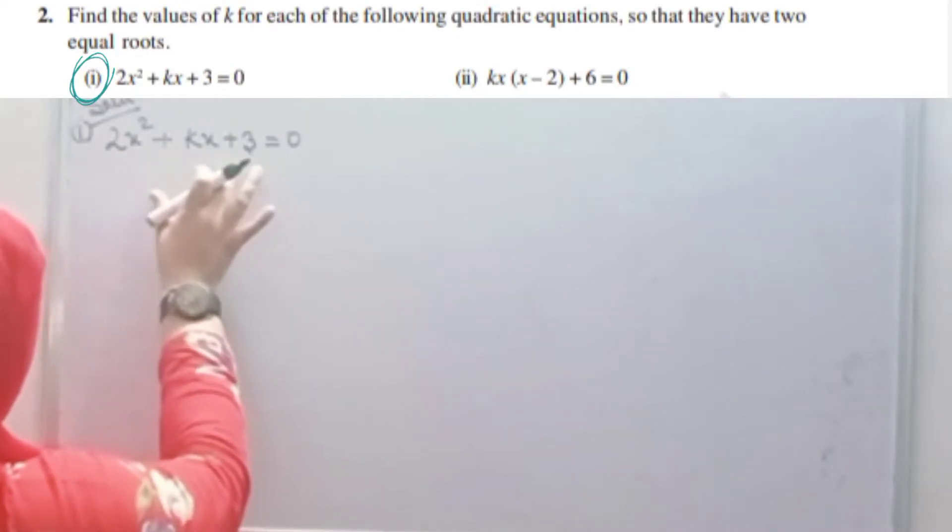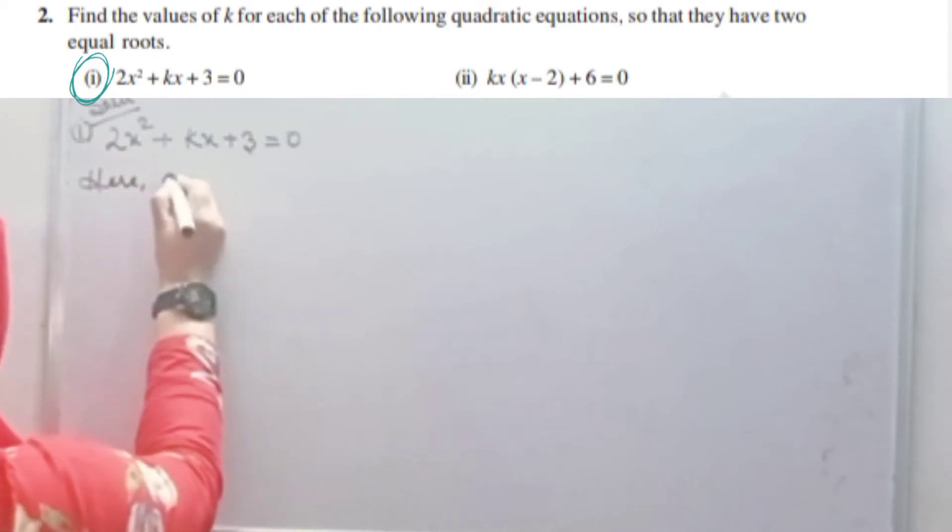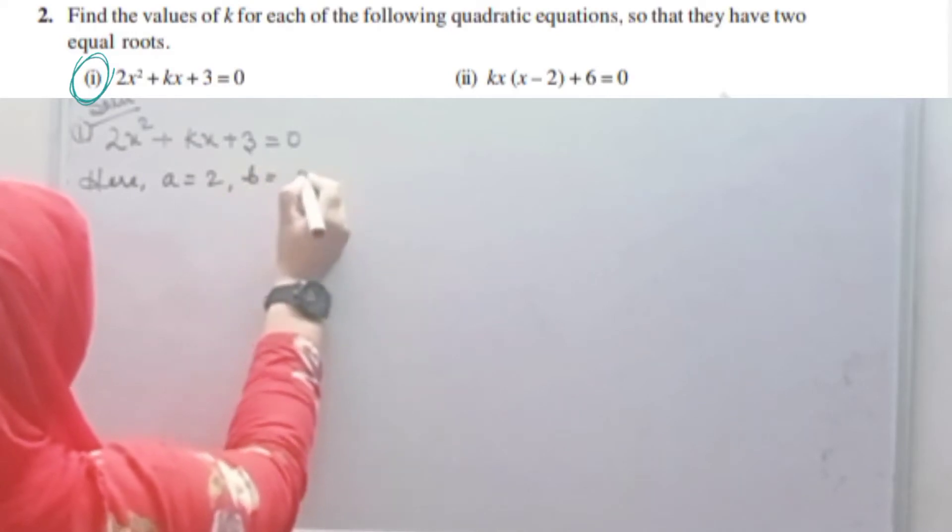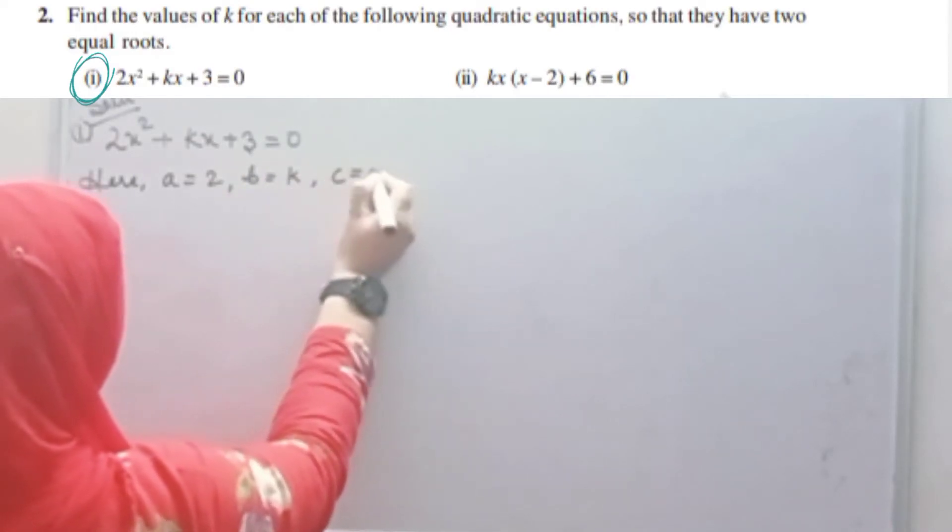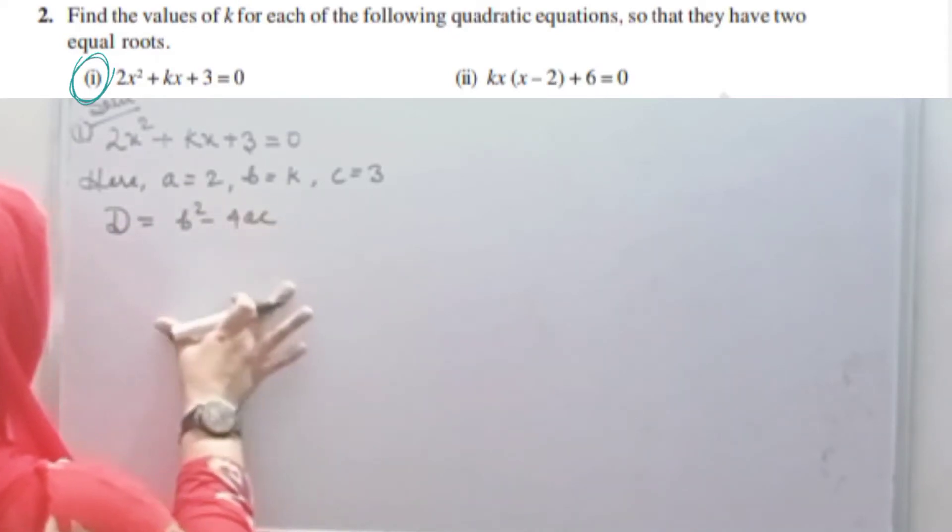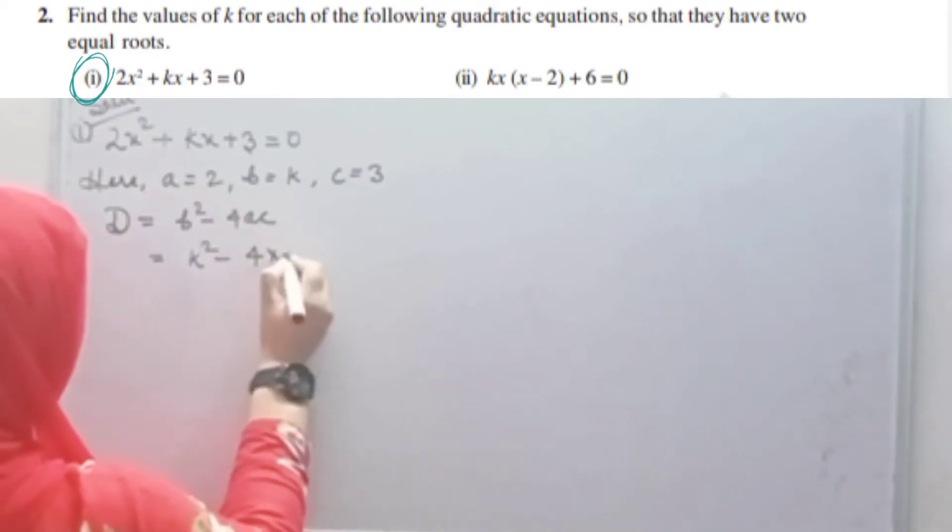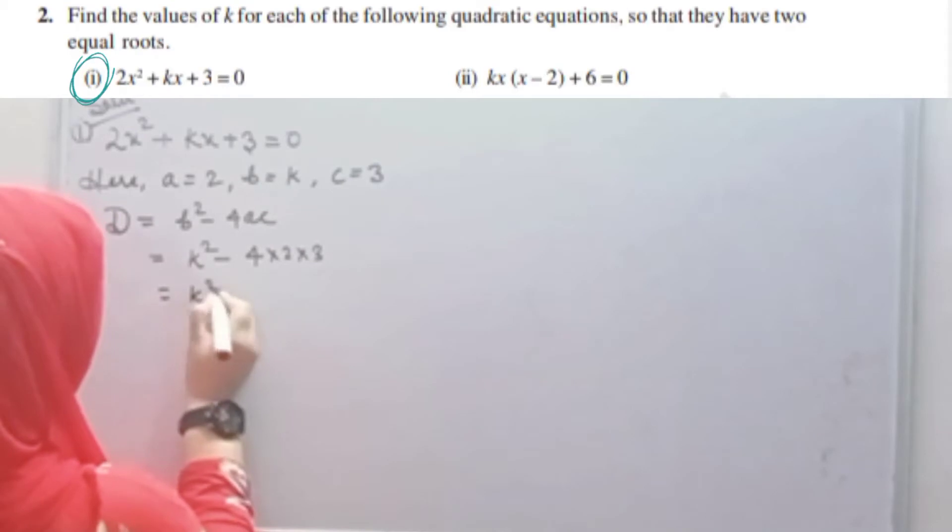We can see this is in the form x squared plus bx plus c. So here, a equals to 2, b equals to k, c equals to 3. So we will find the value of discriminant. D equals to b squared minus 4ac. What is b? k. So k squared minus 4, a is 2, c is 3. So k squared minus 4 times 2 times 3, which is k squared minus 24.